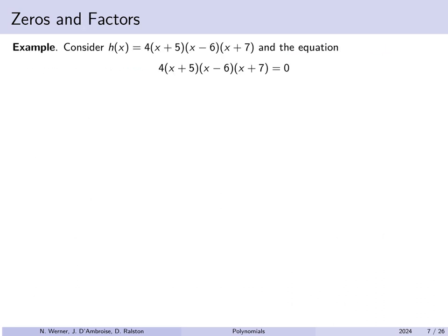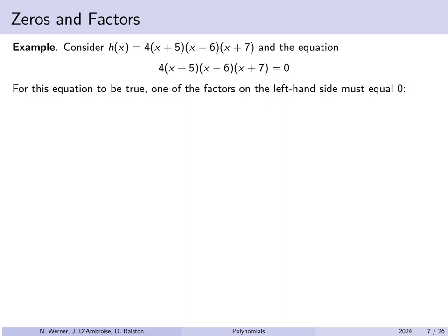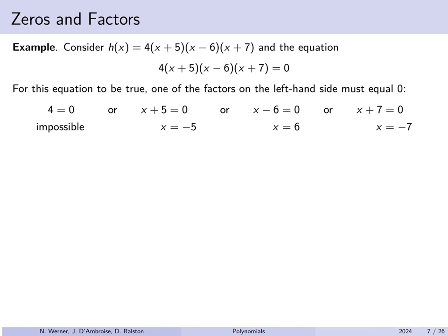Consider h(x) = 4(x + 5)(x − 6)(x + 7). Setting h(x) = 0, for a product of numbers to equal zero, one of them must be zero. Since 4 ≠ 0, we need x + 5 = 0, or x − 6 = 0, or x + 7 = 0, giving x = −5, x = 6, and x = −7 as the three zeros of this polynomial.